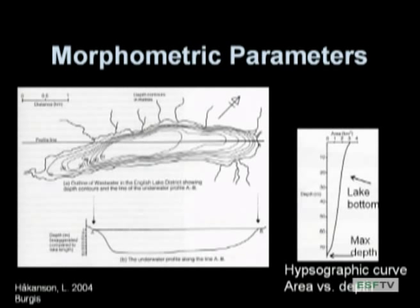Another parameter is the hypsographic curve, which looks at the relative amount of area versus depth. Before getting into this, I want to mention the backwards graphs that both limnologists and oceanographers make. Instead of the y-axis going up, we draw them with the y-axis going down — as if we're taking a chunk out of the lake and looking at factors as we go deeper. It's confusing at first, but in a few weeks you'll get used to seeing these curves for everything.